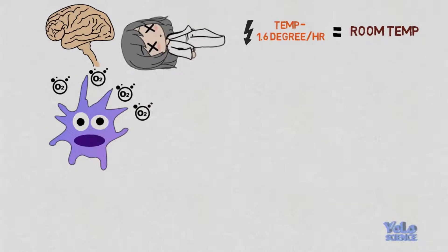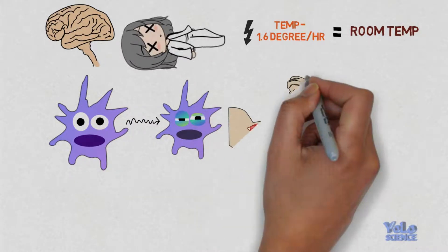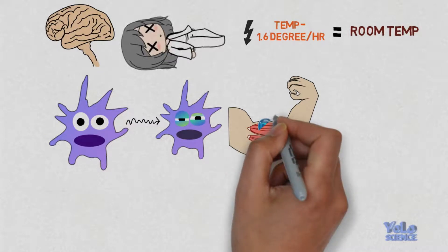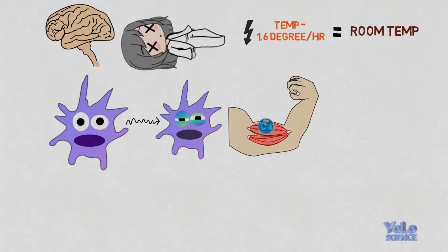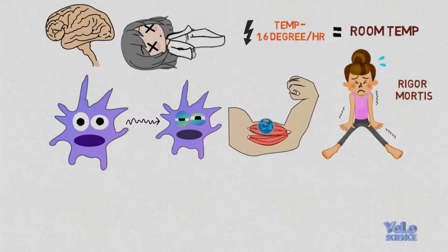In the next few minutes, due to lack of oxygen, cells start dying. Within a few hours, calcium begins to build in the muscles. Due to this, it starts to stiffen. It is called rigor mortis, and this process lasts for about 36 hours.